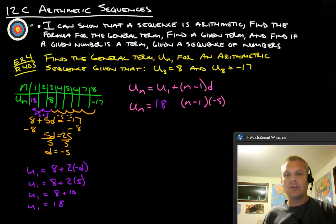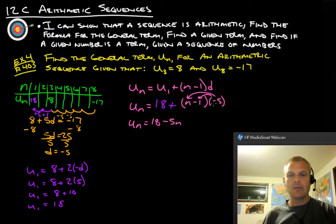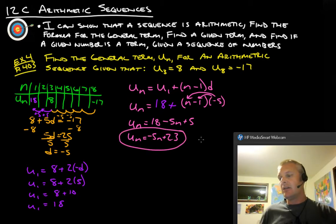So we know that the first term is 18. So let's go through and solve this. u_n is going to be 18, and then we take the negative 5 and distribute it to both of those, and we get minus 5n, and then negative 5 times negative 1 is plus 5. So u_n, 18 plus 5 is 23, and then we also have the negative 5n. So we got u_n equals negative 5n plus 23, and that's our general term formula.